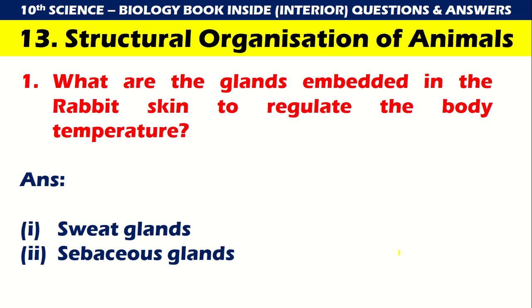Chapter number 13: Structural organization of animals. What are the glands embedded in the rabbit skin to regulate body temperature? The first one is sweat glands and the second is sebaceous glands. Those are the two glands.